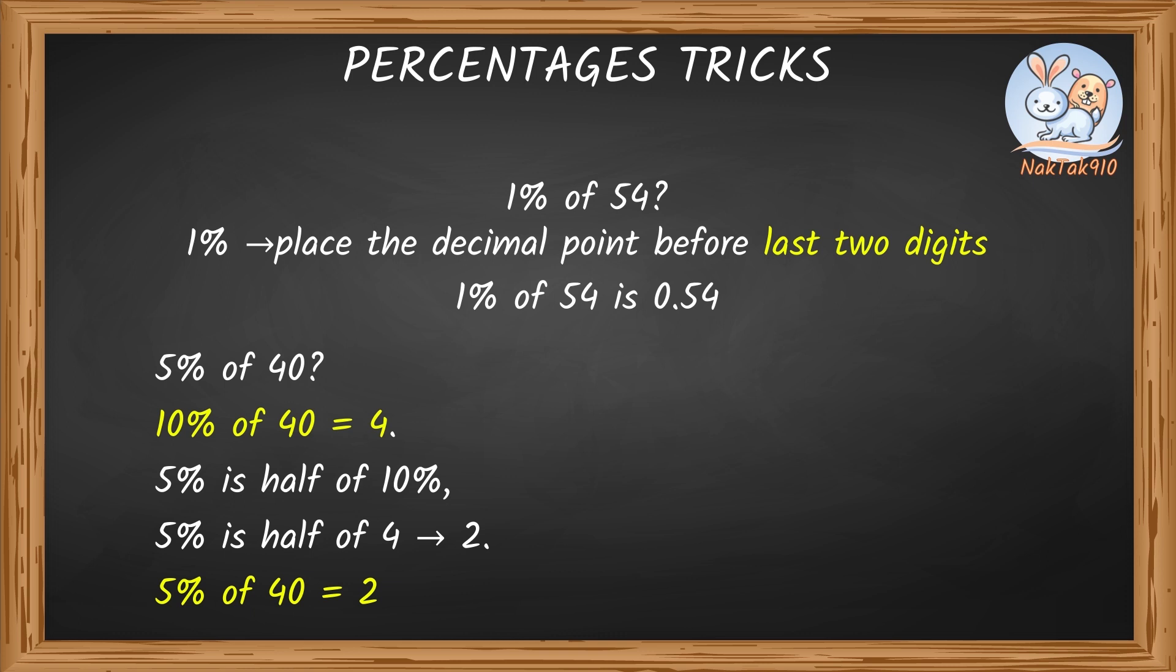Now let's see how we can solve little bit complicated problems using these tricks. Now let's find 25% of 60. 50% of 60 is 30. So, 25% of 60 is half of 30. That's 15. So, 25% of 60 is 15.